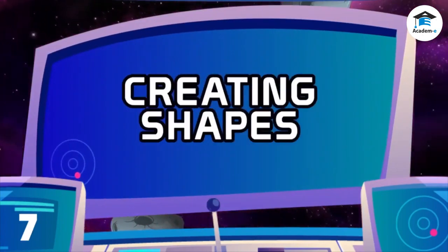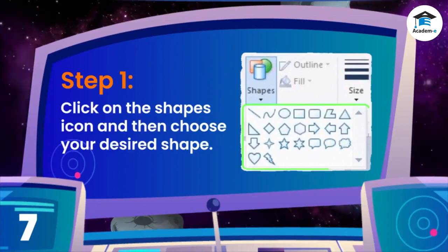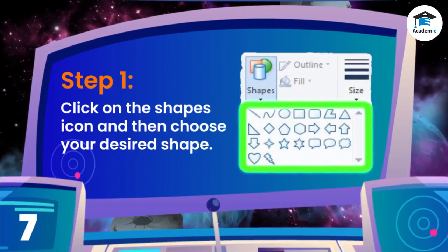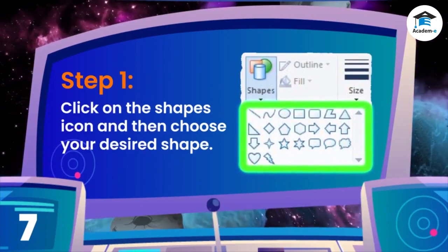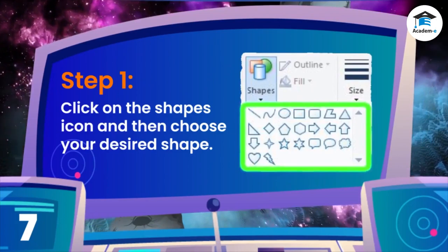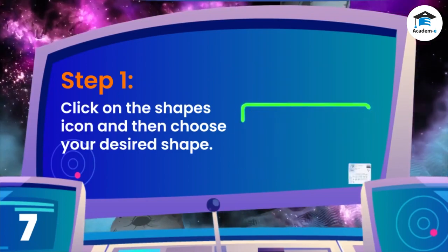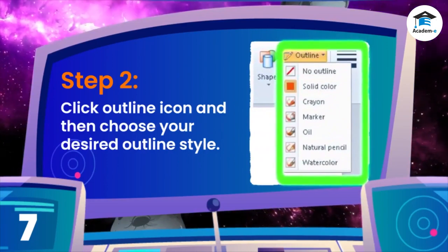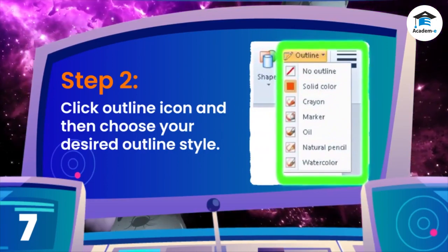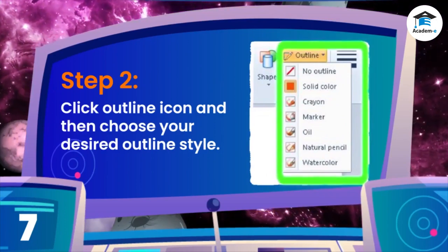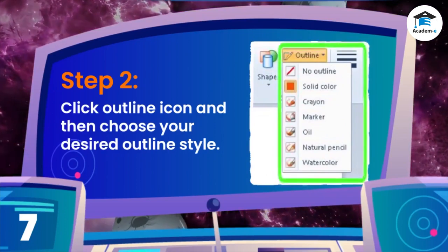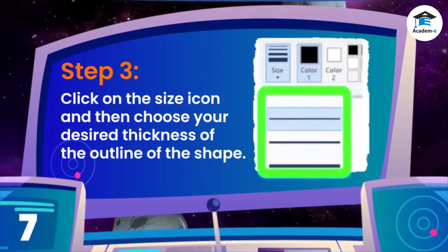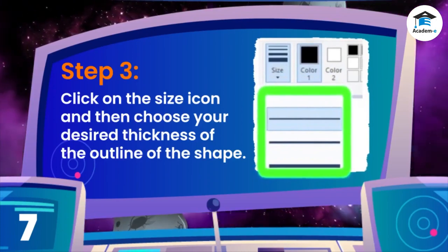Creating shapes. Step 1: Click on the shapes icon and then choose your desired shape. Step 2: Click the outline icon and then choose your desired outline style. Step 3: Click on the size icon and then choose your desired thickness of the outline of the shape.